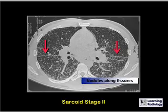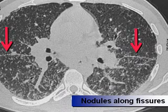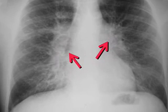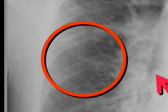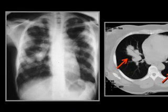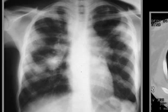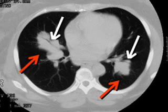Here is another patient with stage 2 sarcoid showing bilateral hilar adenopathy, and red arrows pointing to beading along both of the major fissures. Another frontal radiograph with stage 2 sarcoid shows bilateral hilar adenopathy with the red circle highlighting interstitial lung disease. A further patient demonstrates an acinar pattern, with large irregular opacities in both lungs along with bilateral hilar adenopathy. In another patient, these irregular opacities contain air bronchograms.